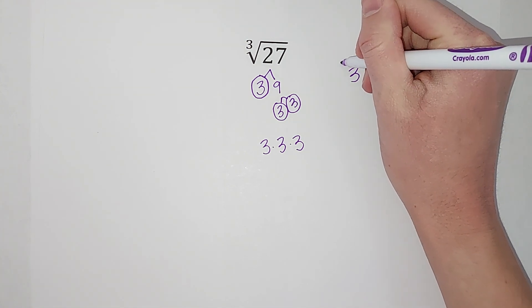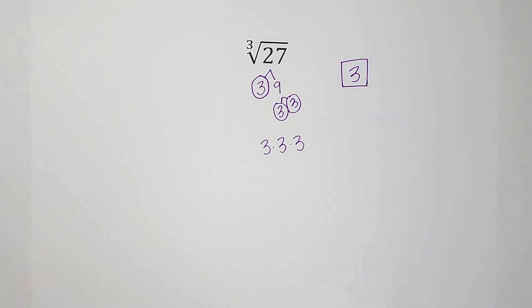So what number multiplied by itself three times gives me 27? Well, it's three. I did not intend there to be that many threes in this problem, but there you go.